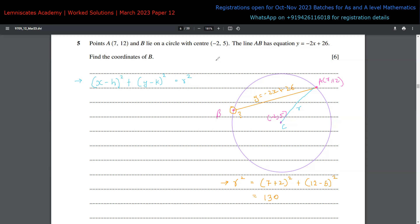Now the equation of circle is (X + 2)² + (Y - 5)² = 130. To find the intersection point, I substitute Y from the line equation. This becomes (X + 2)² + (-2X + 26 - 5)² = 130, which simplifies to (X + 2)² + (-2X + 21)² = 130.